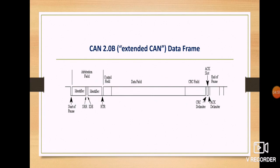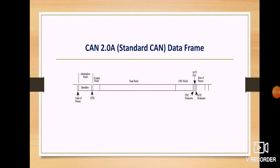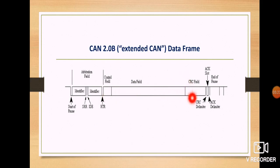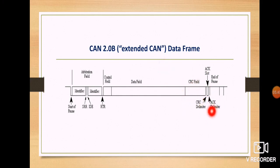For the extended frame, the flow starts the same way with the start of frame, then it comes to the identifier — here we have the 29-bit identifier. It starts with SRR, then goes to IDE, then the control field. The RTR field is also present in the extended frame. The data field follows; once data is successfully transmitted, it checks the checksum. Once cleared, it passes to the acknowledgement; if there is any error, the CRC delimiter broadcasts the error, and once the frame completes successfully, it goes to end of frame.